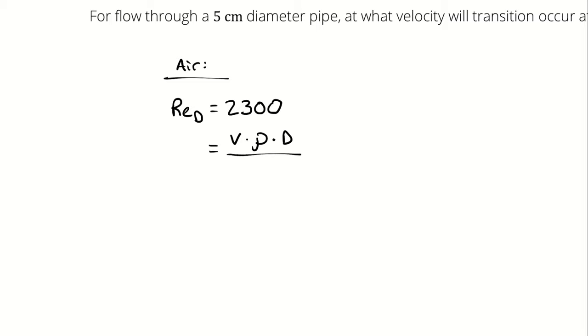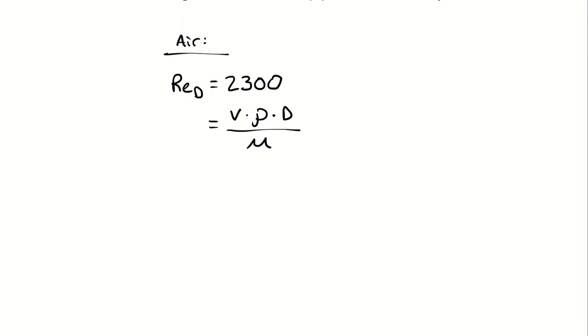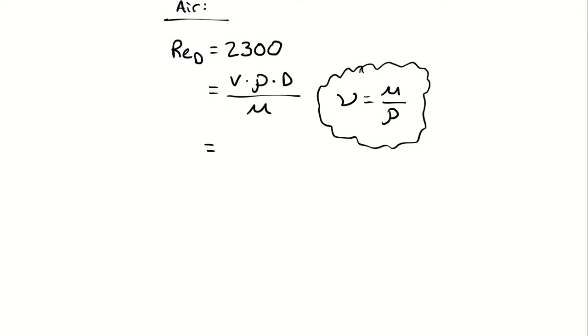divided by dynamic viscosity. Or, for convenience, we can introduce a simplified, normalized viscosity called kinematic viscosity, which is dynamic viscosity divided by density. In that case, our Reynolds number would just be velocity times diameter divided by kinematic viscosity.